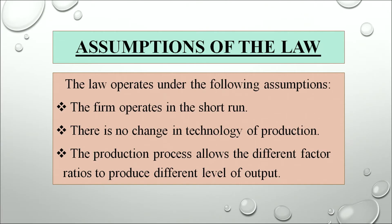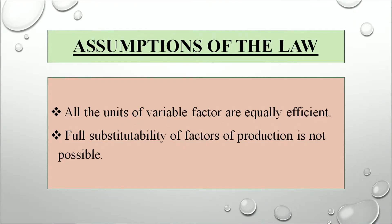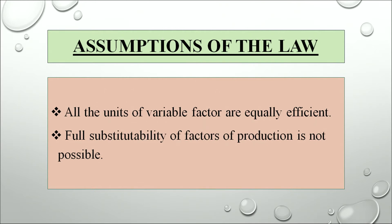We have some assumptions of this law under which it operates. The firm operates in the short run and there is no change in the technology of production. The production process allows different factor ratios to produce different levels of output. All units of the variable factor are equally efficient — we assume all units will perform in an equal manner — and full substitutability of factors of production is not possible.